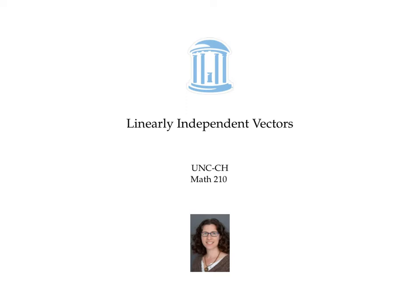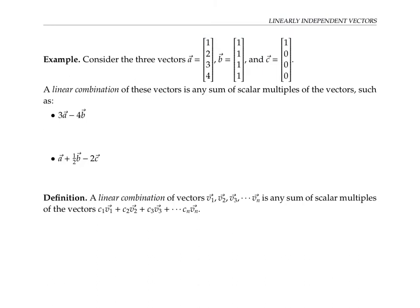This video is about linearly dependent and linearly independent vectors. Consider these three vectors a, b, and c. A linear combination of these vectors is any sum of scalar multiples of the vectors, such as three times a minus four times b, which works out to the vector with entries negative 12, 5, 8.